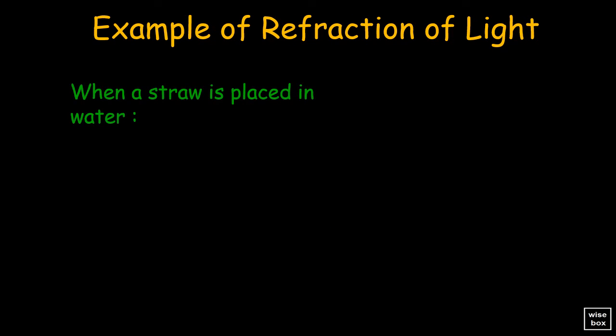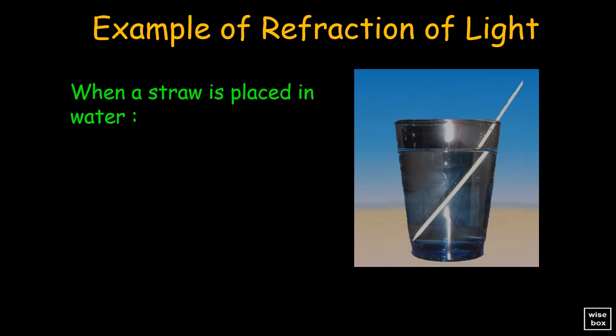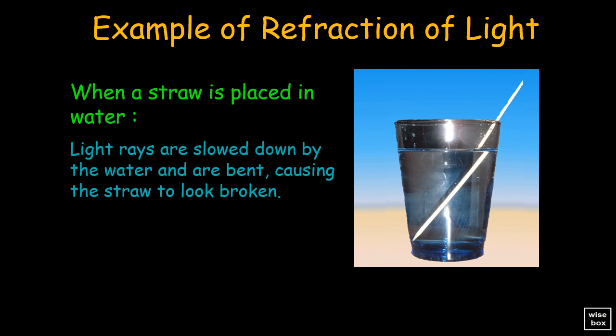When a straw is placed in water it looks like this. In this case, the light rays are slowed down by the water and are bent, causing the straw to look broken. The two mediums in this example are air and water.